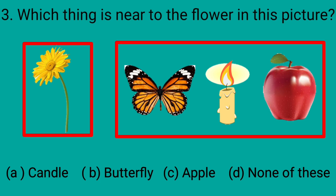So, next to the flower, we can see the butterfly. It is nearer to the flower than the candle and the apple. So, B, butterfly is the right option here. And we will put a tick mark at option B.